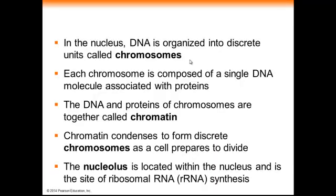The DNA is organized into units called chromosomes. Each chromosome is composed of a single DNA molecule which is wrapped around specific types of proteins. When we add the DNA to the proteins, we call that chromatin — that's the material that makes up chromosomes. The chromatin will condense to form specific and discrete chromosomes as the cell gets ready to divide. Another structure found within the nucleus is called the nucleolus, and it is the site of ribosomal RNA synthesis. Ribosomal RNA is part of the ribosome and helps carry out its function.